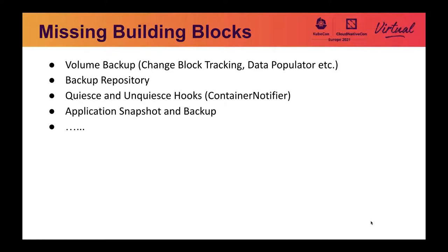So what are the missing features? This is a short list. We're looking to design and build volume backup — in some vendors, snapshots are stored externally; in others, they're stored locally on the primary storage system. And a backup repository — where do we put our backup manifests? Quiesce hooks — how do you trigger a command in an application so it can quiesce and unquiesce itself? Application snapshot and backup — this is basically an application-level abstraction including a controller that allows application-consistent snapshot and backup.